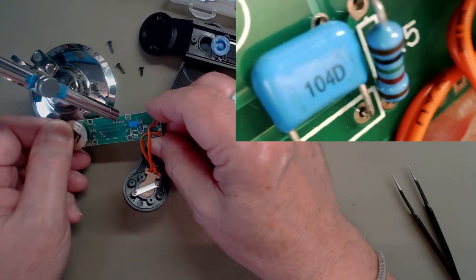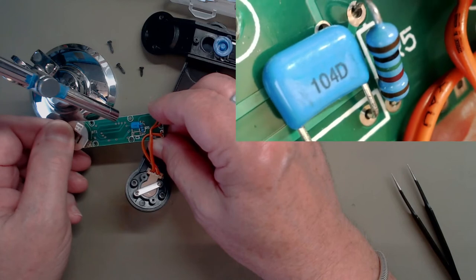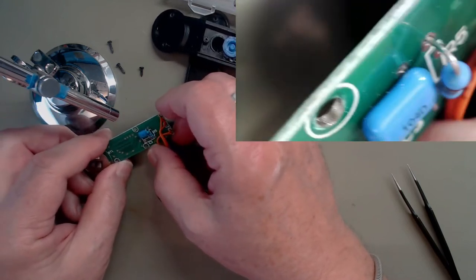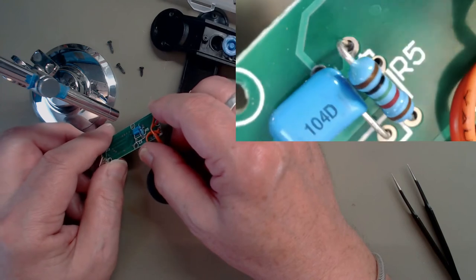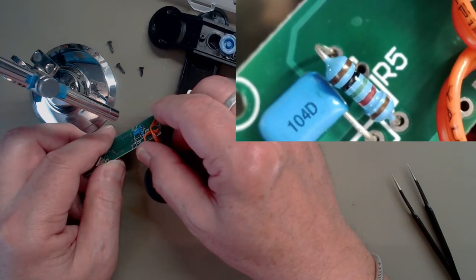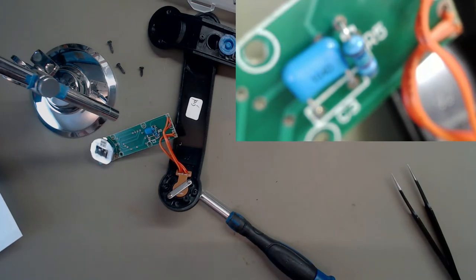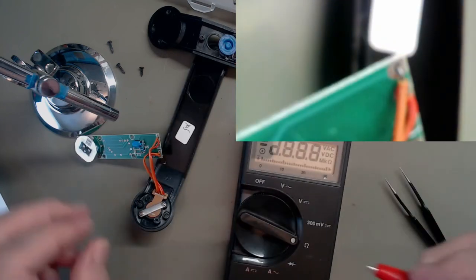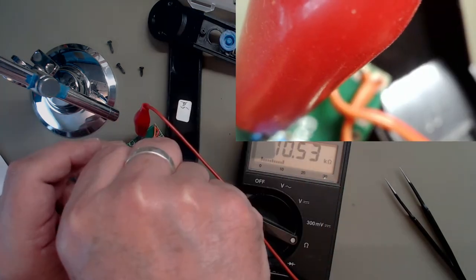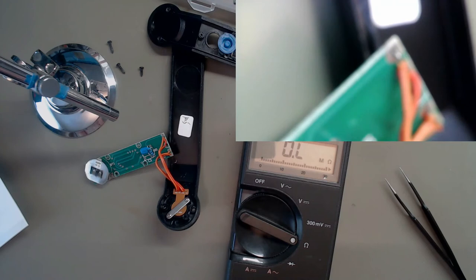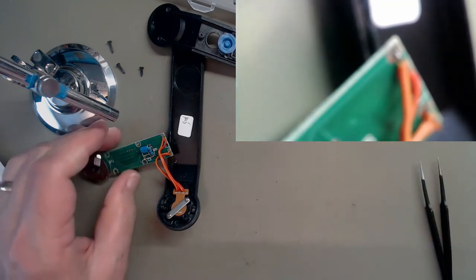On the other side, a 100 nanofarad capacitor. 1052 - strange value. Is that 105 with two zeros? I never remember. That's 10.5k. Yeah, I suppose 105 and then two noughts. Strange value. Obviously one percent because it had a brown bar at the end of it.